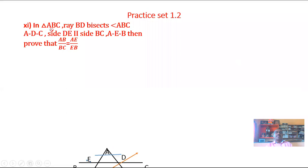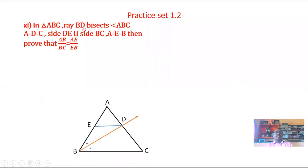In triangle ABC, ray BD bisects angle ABC, and side DE is parallel to side BC with D on AB and E on AB. Then prove that AB over BC is equal to AE over EB. In triangle ABC, ray BD is the angle bisector of angle ABC. By using the angle bisector triangle theorem, the ratio AB over BC is equal to AD over DC. This gives equation number 1.